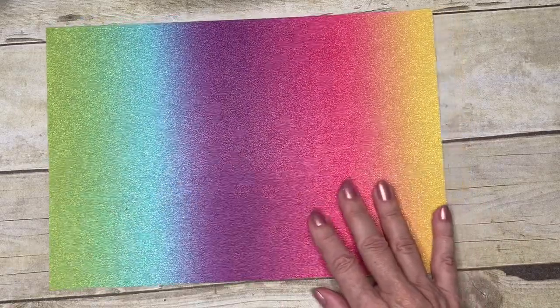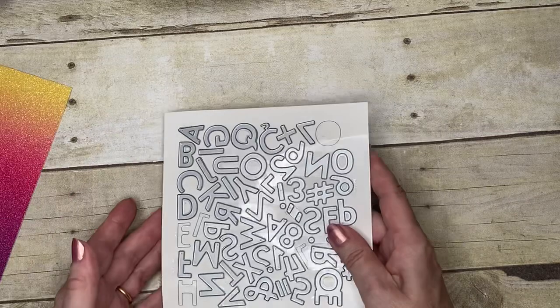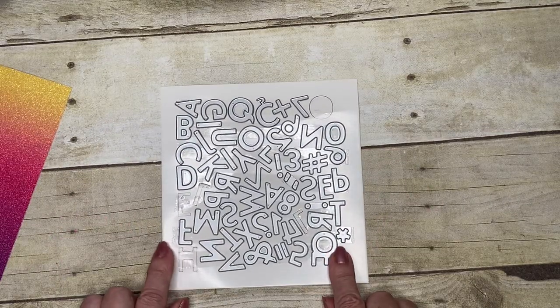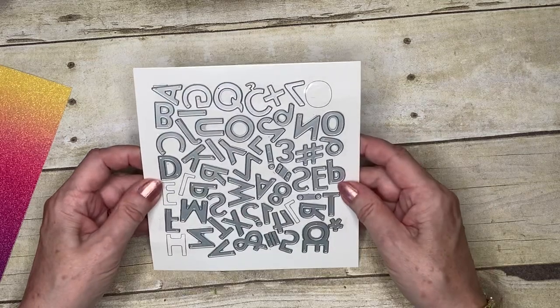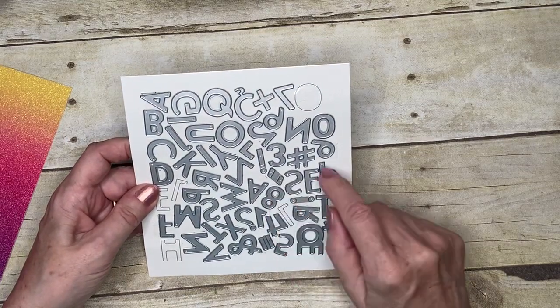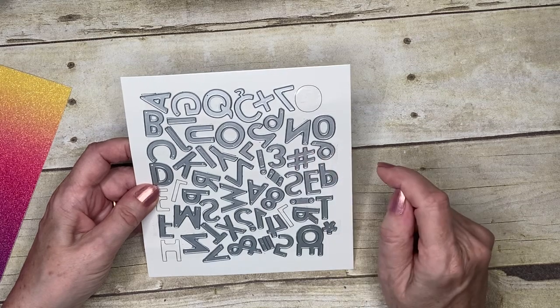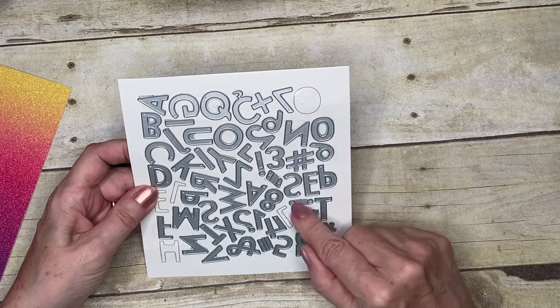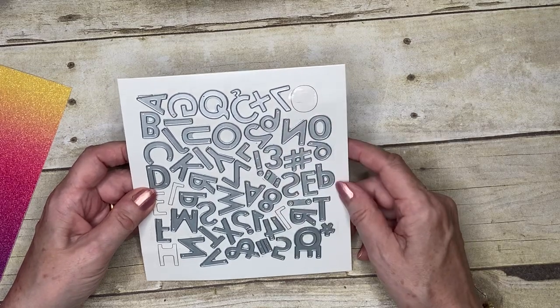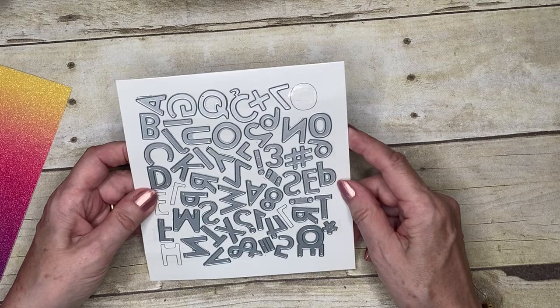So the next is the dies. Now these are great because they've got not only letters, but they've also got numbers. You can see an eight there. And we've got things like hashtags and colons and an exclamation point. So there's some really great variety there.